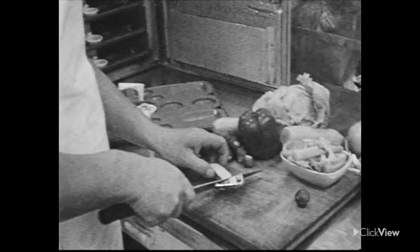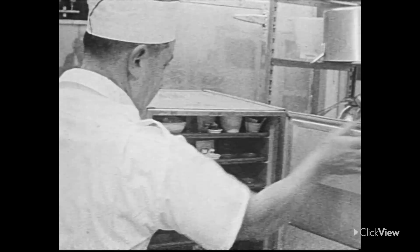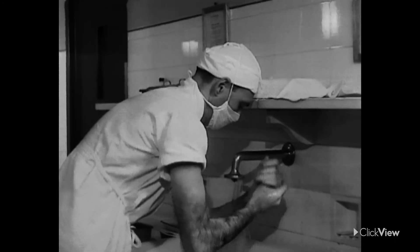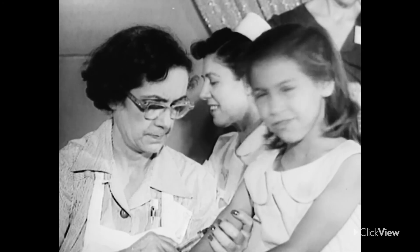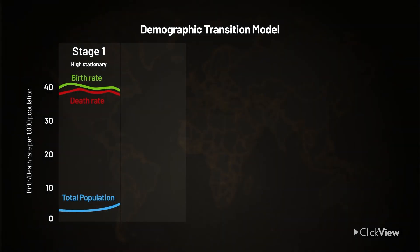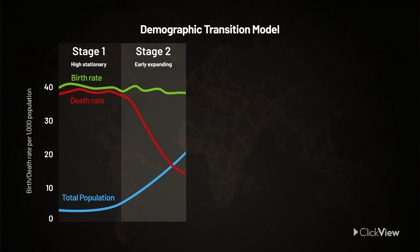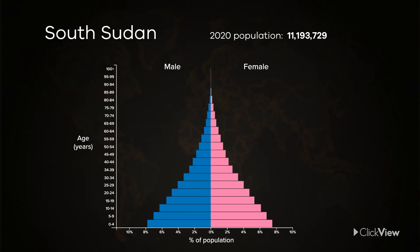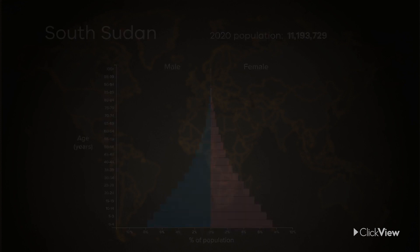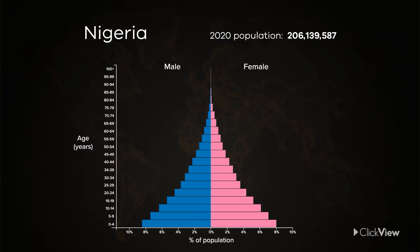Thanks to centuries of science, we know a lot about how to keep food and water germ-free, how to keep wounds from becoming infected, and how to vaccinate against many diseases. As people gain access to basic levels of health care, sanitation, and food security, the death rate falls, especially among children. Meanwhile, the birth rate remains high. While stage one was relatively stable, stage two represents a population explosion — more children survive and have children of their own. Nations south of the Sahara in Africa, such as South Sudan and Nigeria, are considered to be at stage two of the model.